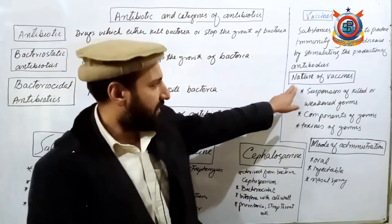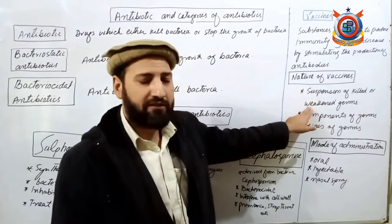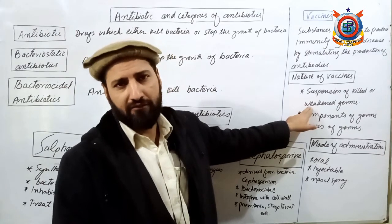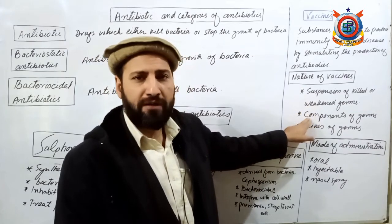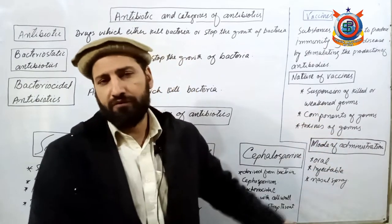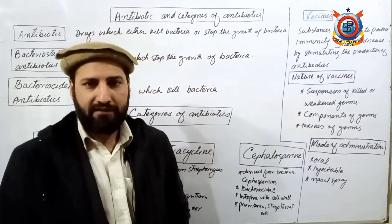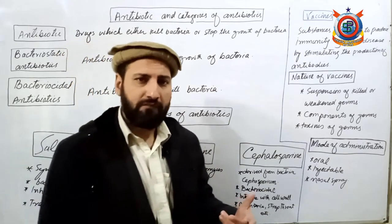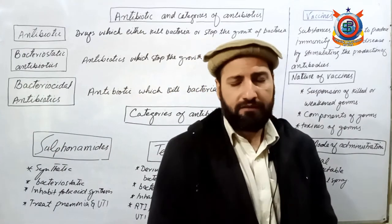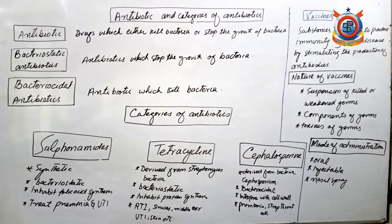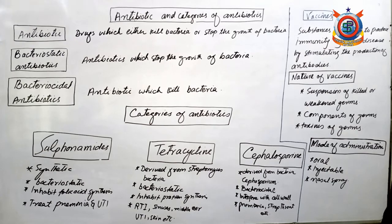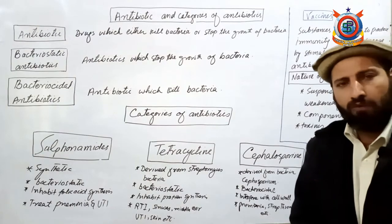Vaccine کی nature ہوتی ہے suspension of killed or weakened germs - disease causing germ کو یا kill کیا جاتا ہے، یا کمزور کر دیا جاتا ہے، یا ان کے body parts یا toxins لیے جاتے ہیں۔ Mode of administration تین طریقے ہیں: orally، injectively، اور nasal spray کے طرح body کے اندر داخل کروایا جاتا ہے۔